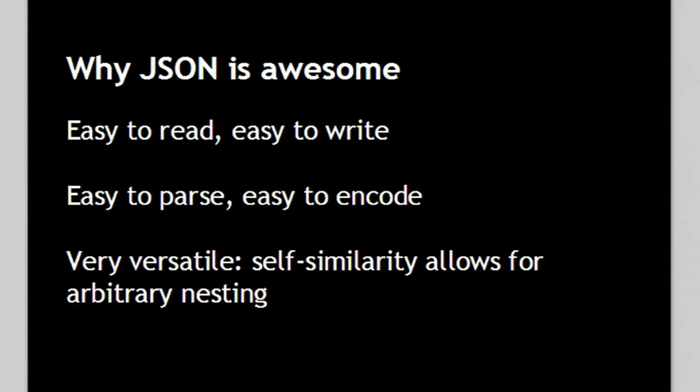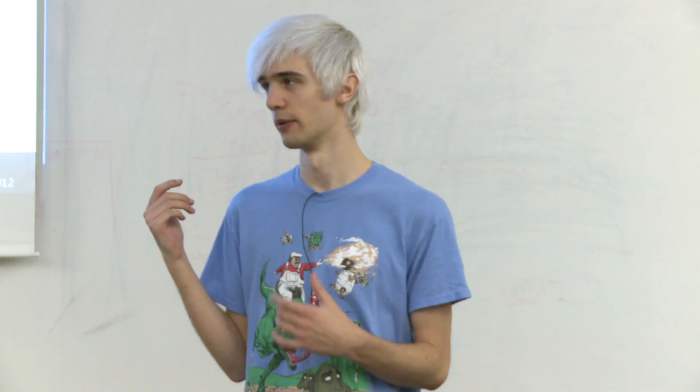A few properties make JSON particularly good for APIs. Compared to a lot of things in CS50, it's comparatively very easy to read and write — you can indent it for a nice pretty version. Moreover, it's easy for a computer to parse and encode, which makes it fast. And the self-similar nature — JSON within JSON within JSON — is really nice for storing data.